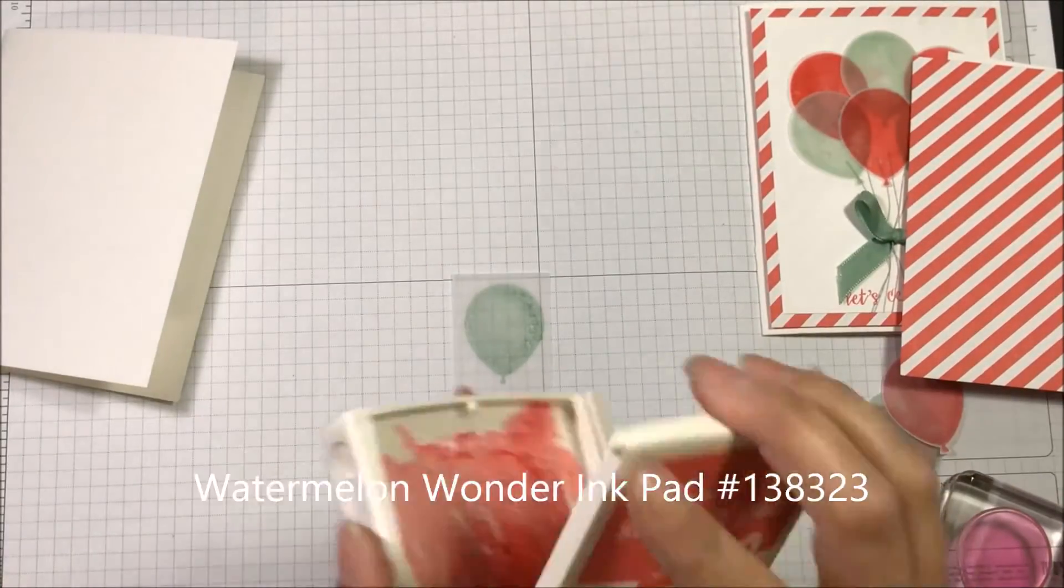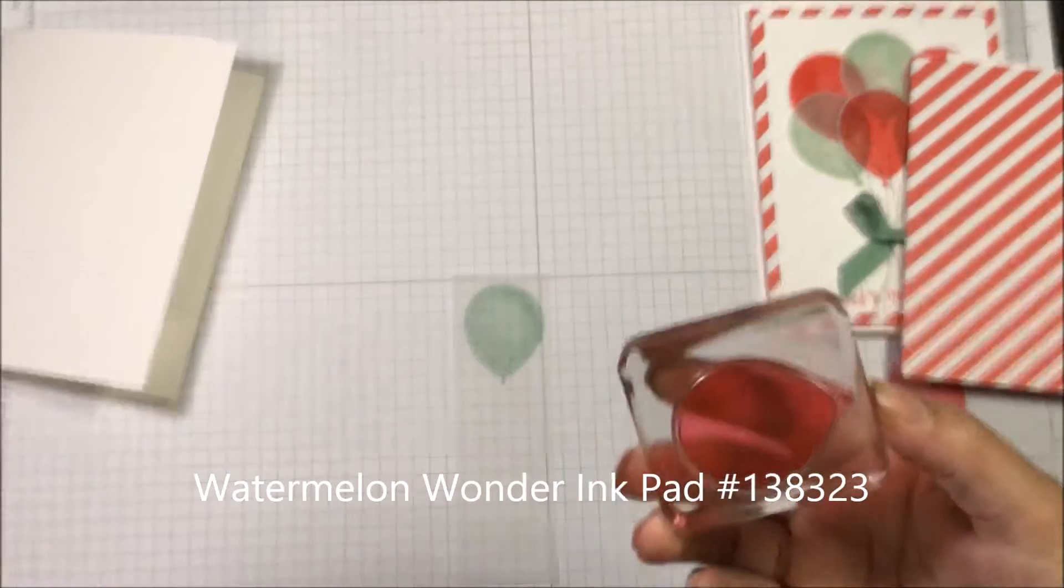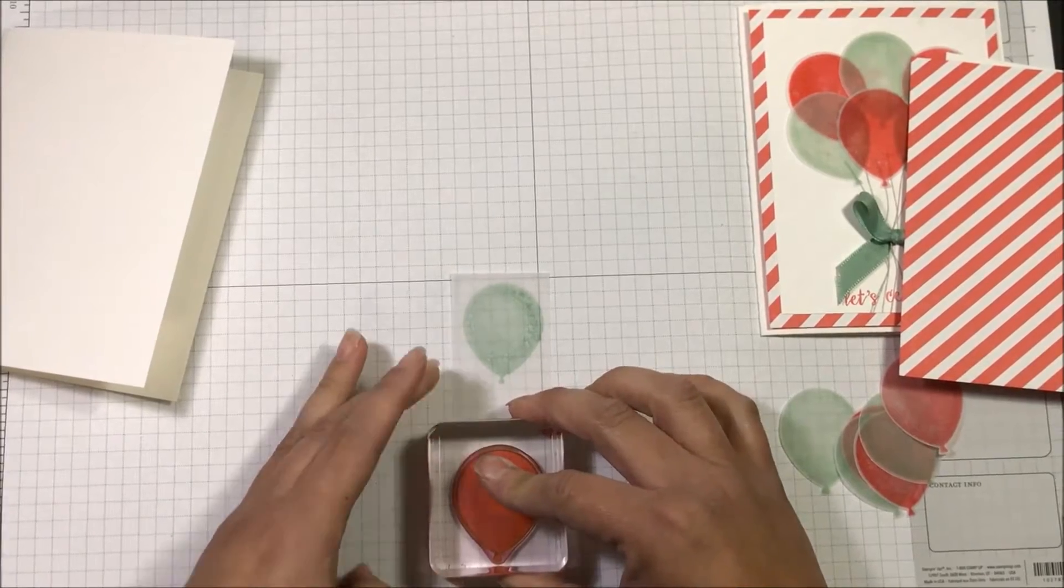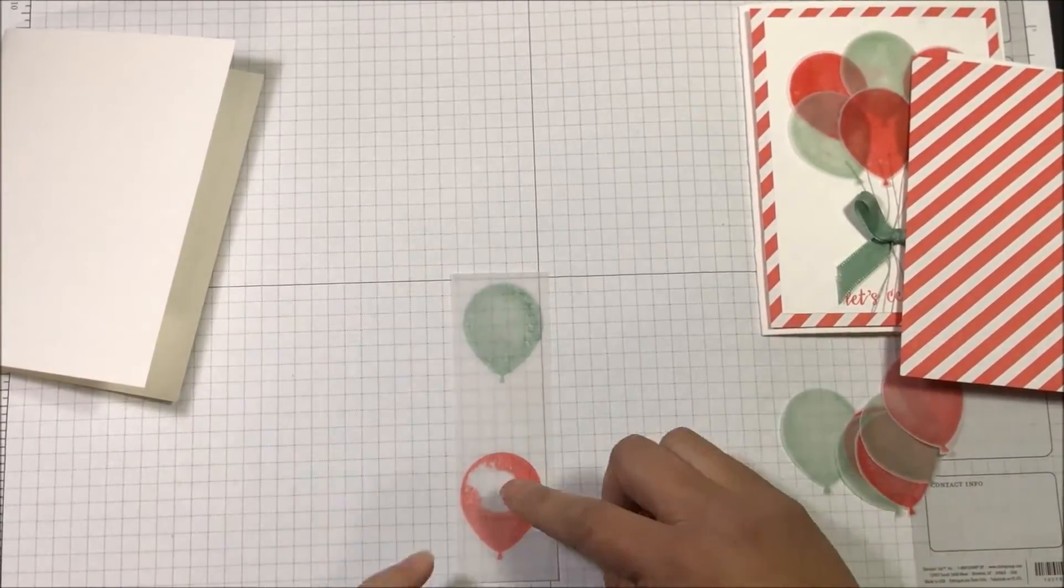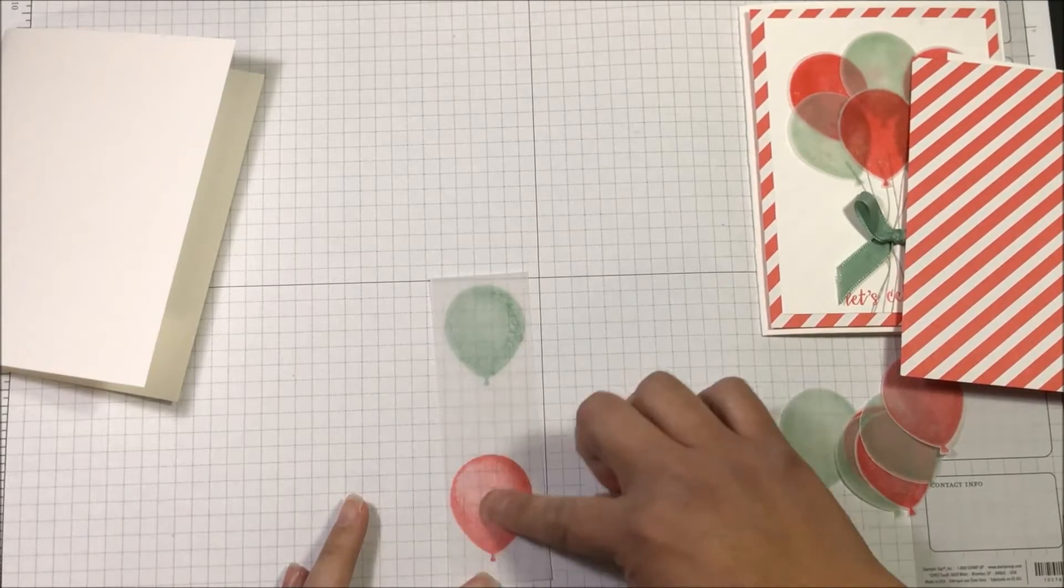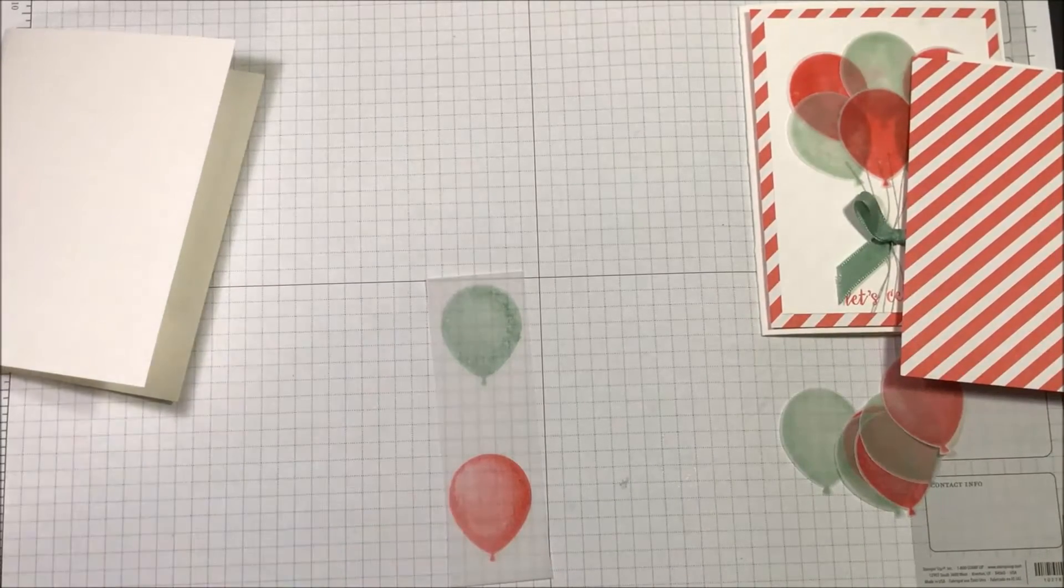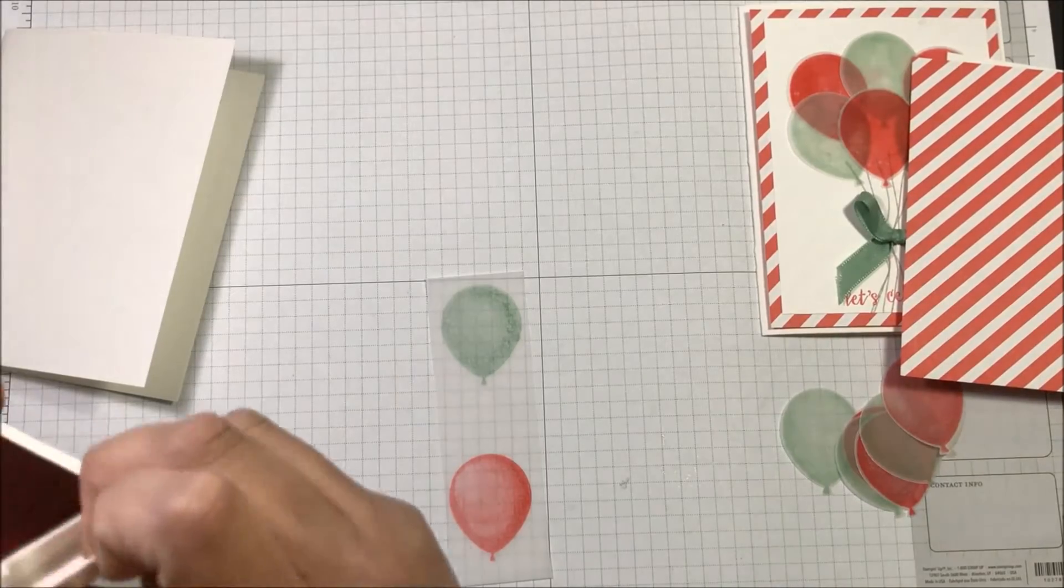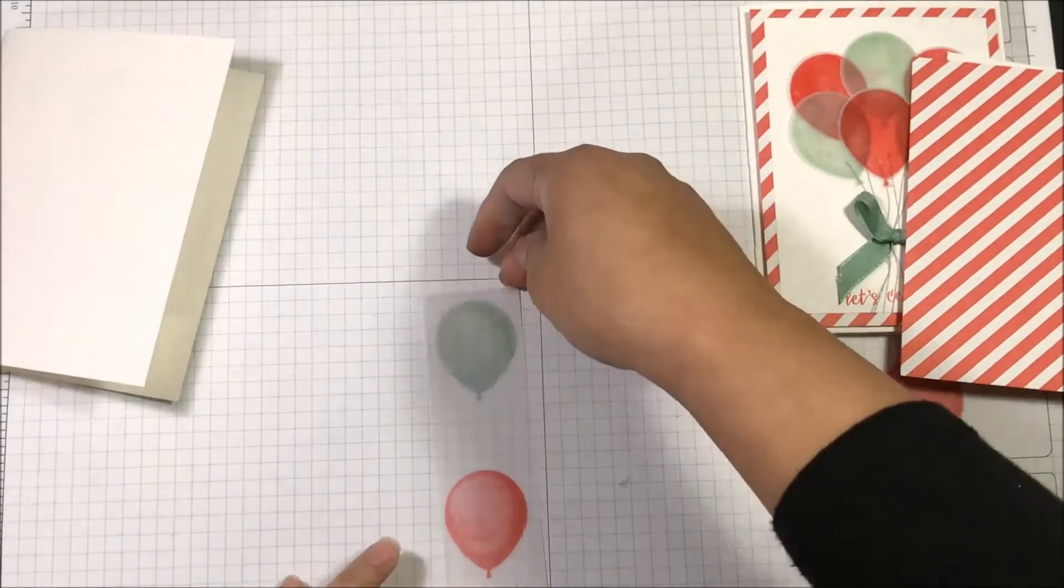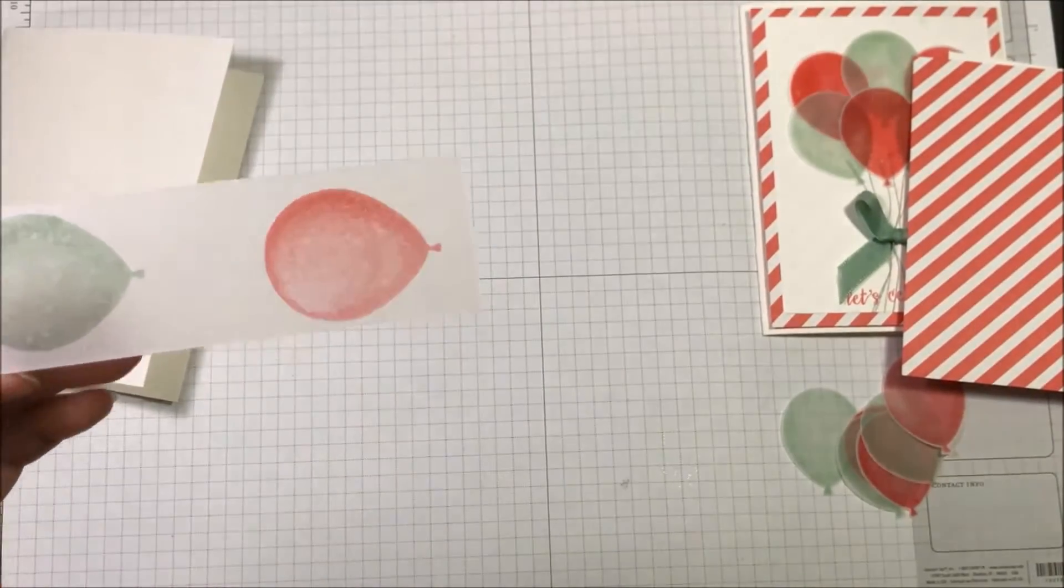And then I am going to also do that in Watermelon Wonder. Now you will want to give these some time to dry. Otherwise, you will make a big mess because they will bleed onto one another, especially with the Watermelon Wonder being so bright and vibrant, you will end up with a big mess. See, that one didn't come out very well at all. But I got my little trick to do that. I just fill that in and you can use a sponge or a dauber to do this and it would do just as well and not as messy.